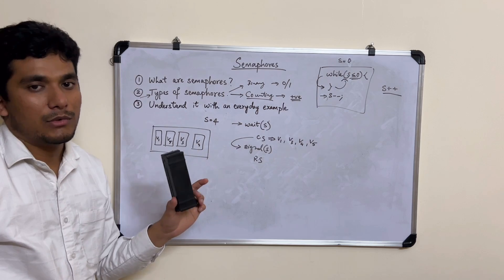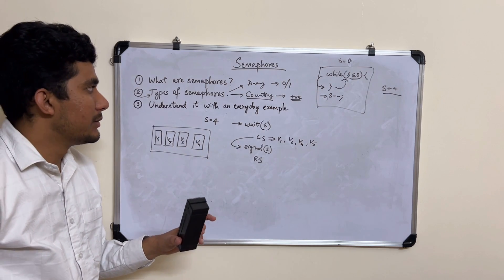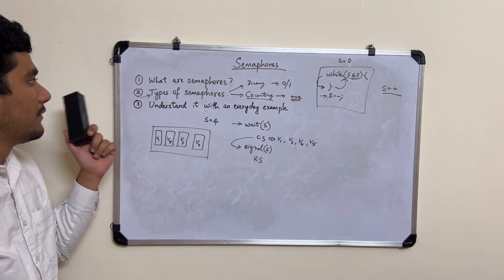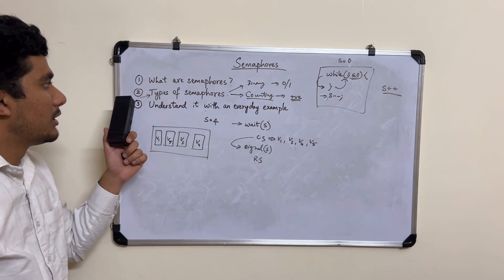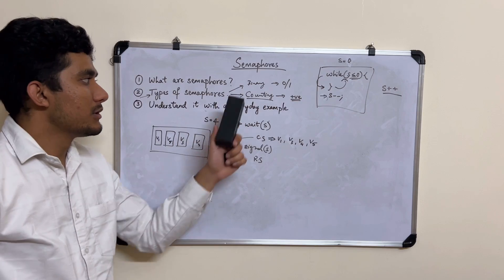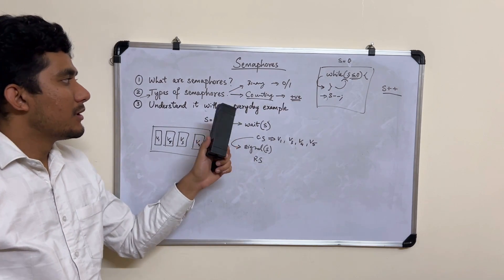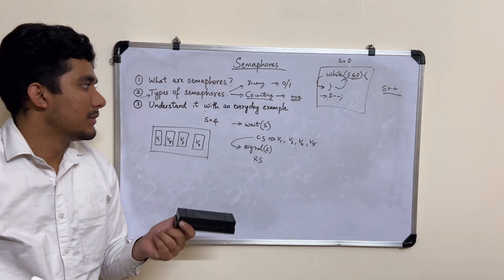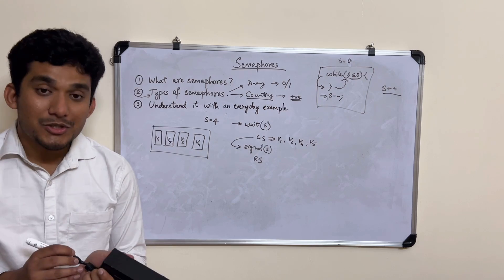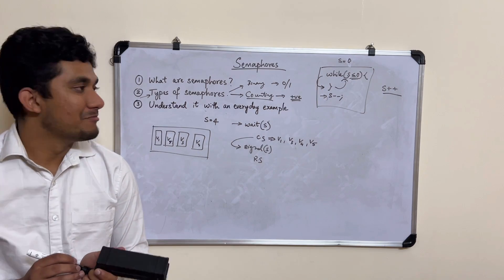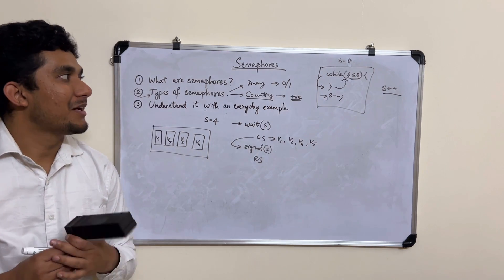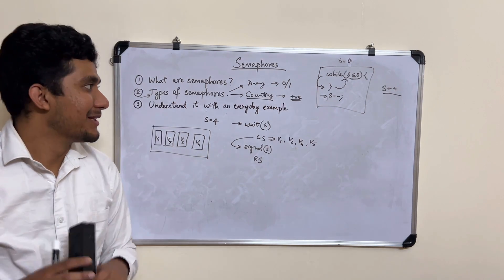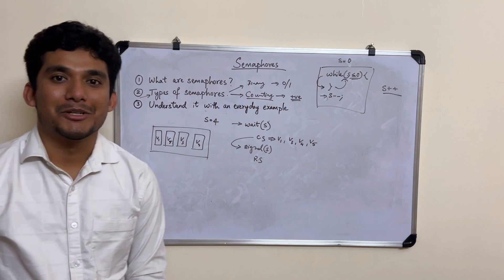In this video we understood what semaphores are — normal integer variables used to achieve process synchronization. We saw the two types: binary semaphores and counting semaphores, and understood both through everyday examples. I hope that was understandable. Thank you.